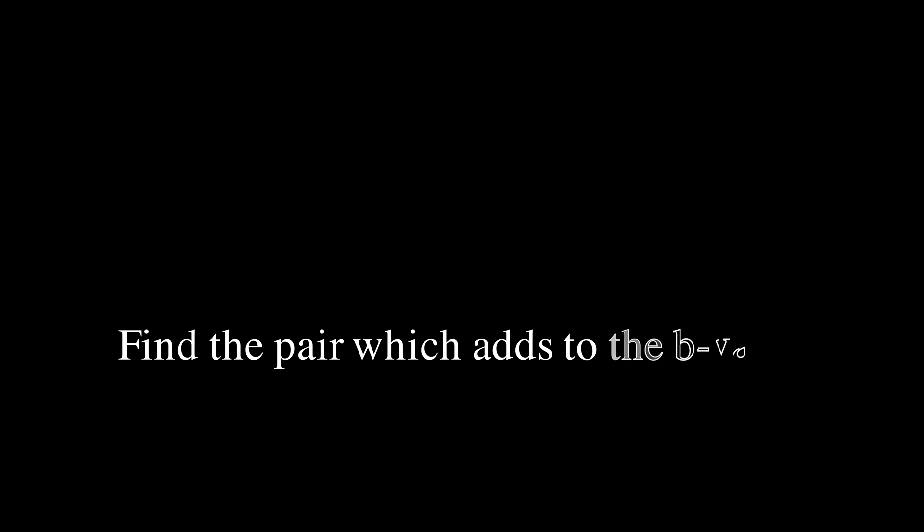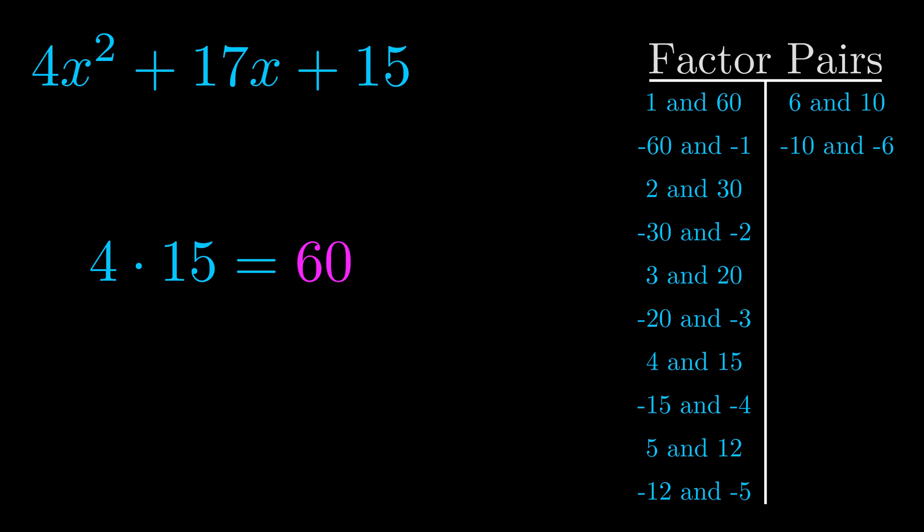The b value is the coefficient on the x term. That's the middle term, the one that we haven't done anything with yet. And really this is the only factor pair that we need.